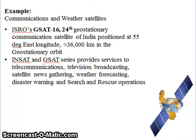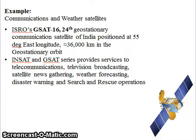Examples of geostationary satellites include satellites in orbit for communication and weather monitoring. For example, all INSAT and G-SAT series of the Indian Space Research Organization are communication and weather satellites. These provide services to telecommunications, television broadcasting, satellite news gathering, weather forecasting, disaster warning, and search and rescue operations. One such satellite in the G-SAT series is ISRO's G-SAT 16.